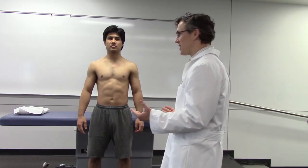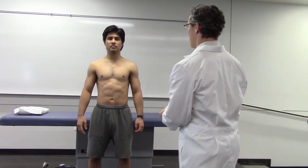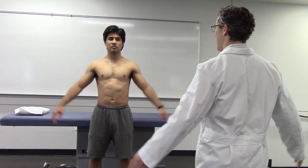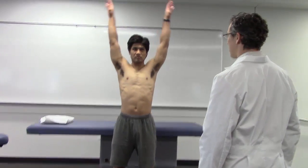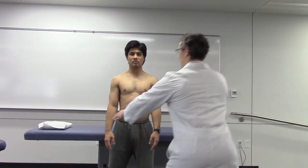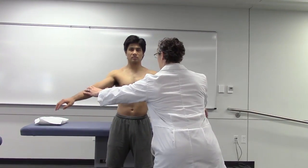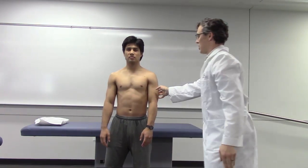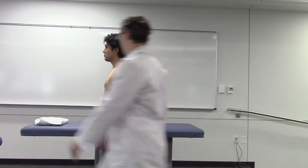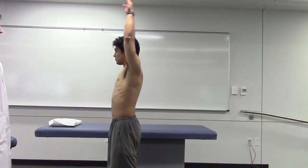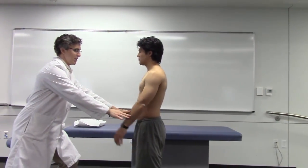For a high-yield clinical exam with the upper extremity, we're going to have the patient start with raising his arms over his head, checking abduction and active range of motion. We'll repeat that to check muscle strength, then we'll be checking flexion, and again muscle strength in flexion.